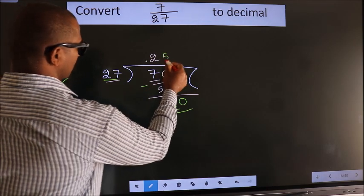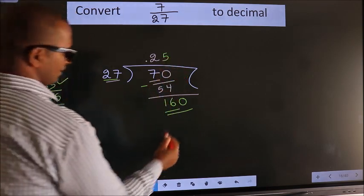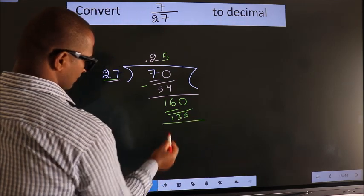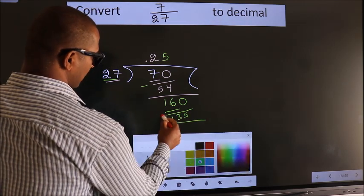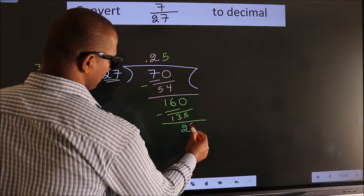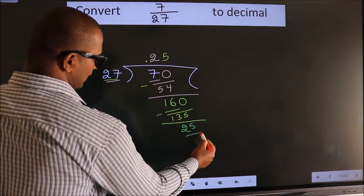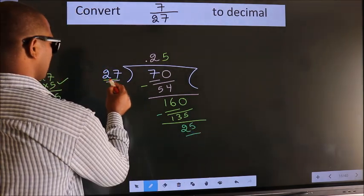So 5 here, 135 here. Now we subtract and get 25. Here we have 25, here 27.